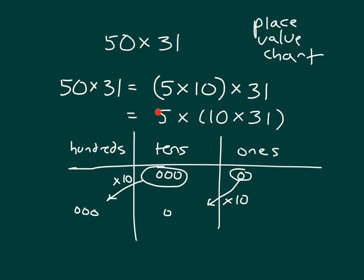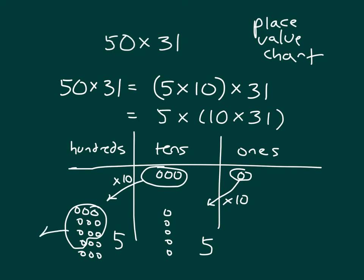But I still have to multiply by 5 — 5 times as much. So to multiply by 5, we make those copies. Counting the tens place: 1, 2, 3, 4, 5. And the hundreds: 5, 10, 15 — that gives us 15 hundreds, so we regroup one of those over to the thousands place. So we have the number 1,550.